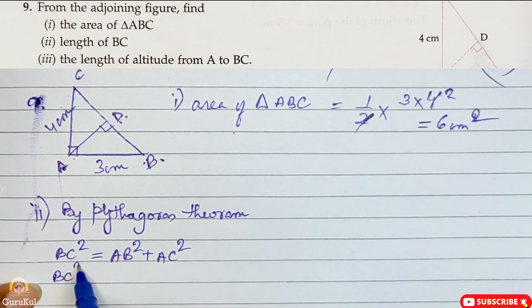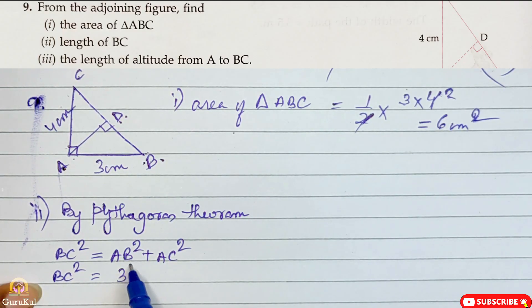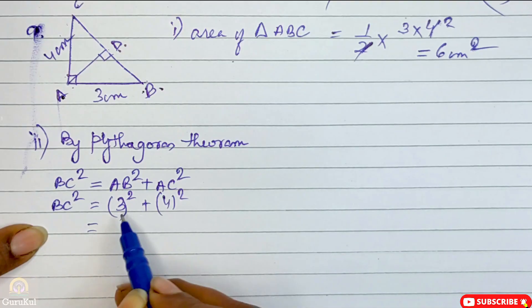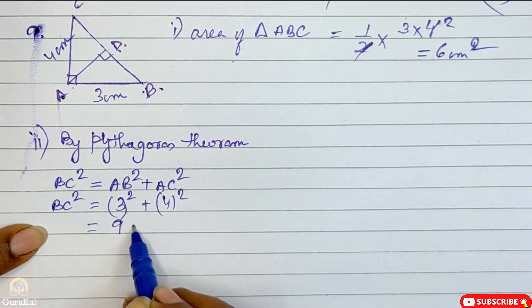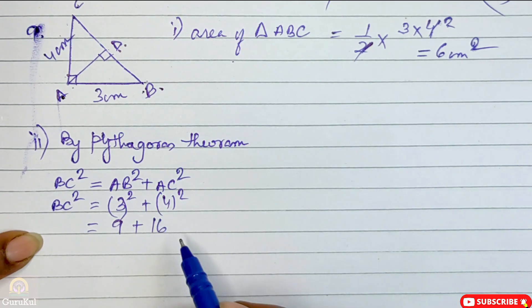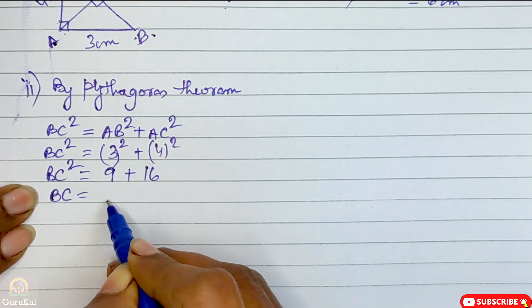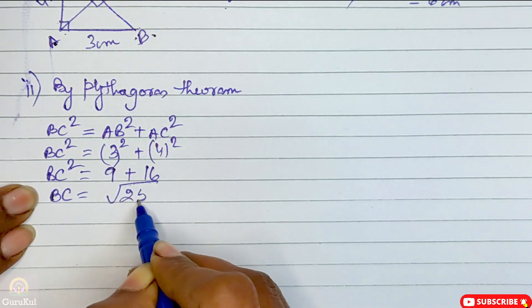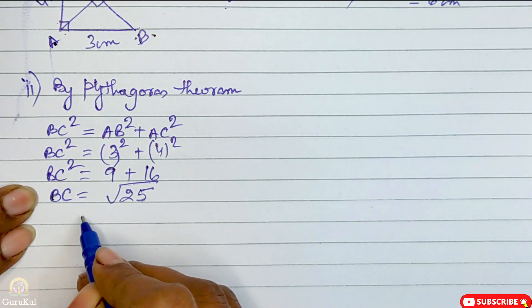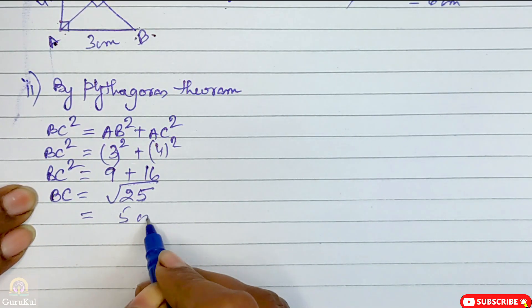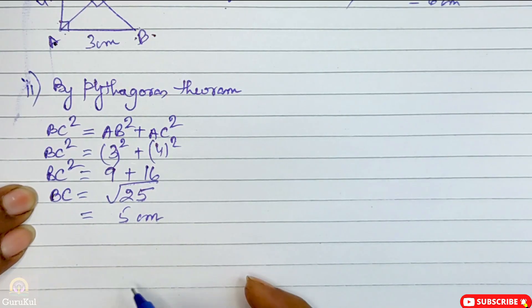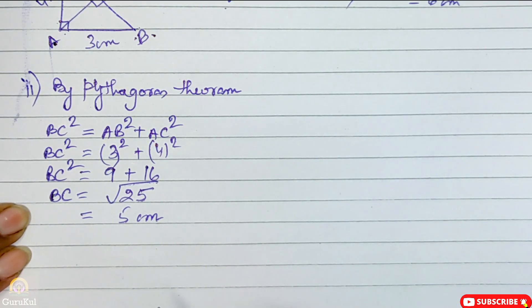So BC² = AB value 3² plus AC value 4² = 9 + 16 = 25. So BC = square root of 25, which is 5 centimeters. Second part solved.